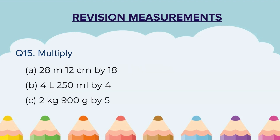Question 15: Multiply — A) 28 meters 12 centimeters by 18, B) 4 liters 250 ml by 4, C) 2 kg 900 grams by 5. Students, remember to pause the video, solve the question, and only then move to the next question.